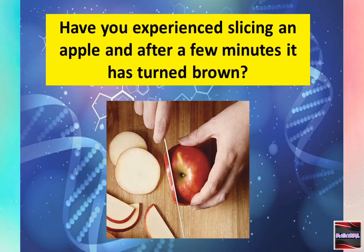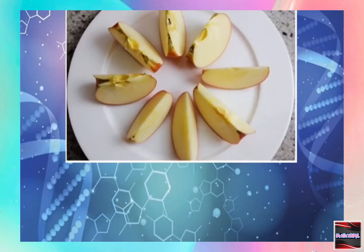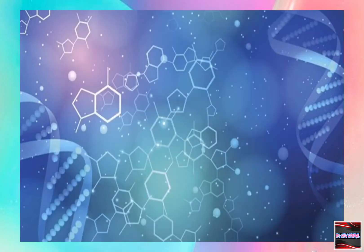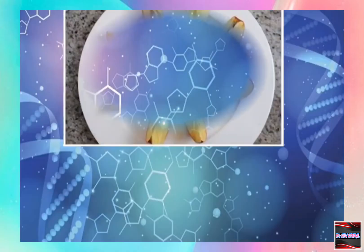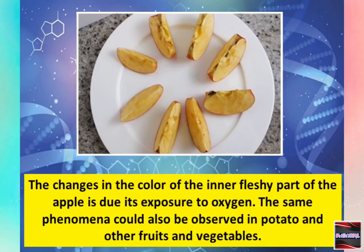Have you experienced slicing an apple and after a few minutes it has turned brown? In this newly sliced apple, you will notice the fleshy part. The change in color of the inner fleshy part of the apple is due to its exposure to oxygen. The same phenomenon could also be observed in potato and other fruits and vegetables.